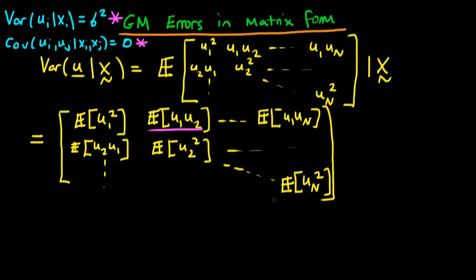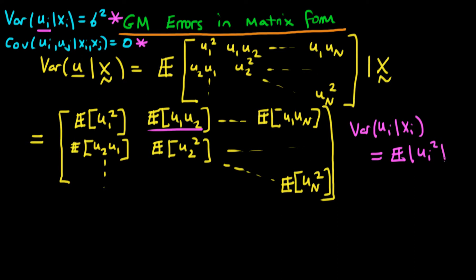So this is our variance of our vector u in matrix form. How can we now translate our conditions of homoscedasticity and no autocorrelation into this particular matrix? Our first condition is that the variance of the individual error u given x is just equal to a constant sigma squared. Since we know that the expectation of an individual error u is equal to zero, the variance of an individual error u given x_i is exactly the same as the expectation of u squared given x_i.